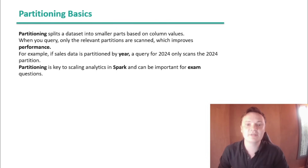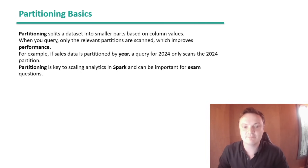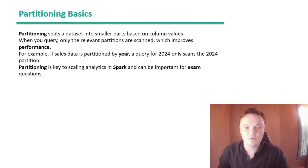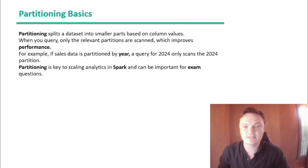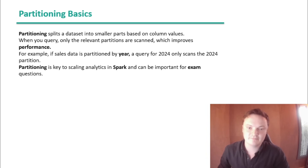Partitioning basics: partitioning splits a dataset into smaller parts based on column values. When you query, only the relevant partitions are scanned, which improves performance. For example, if a sales table is partitioned by year, a query for 2024 only scans the 2024 partition. Partitioning is key to scaling analytics in Spark and is an important part of the exam.